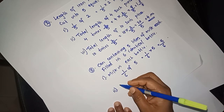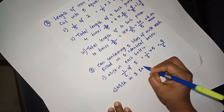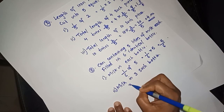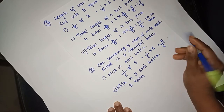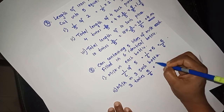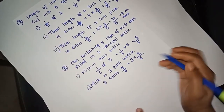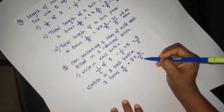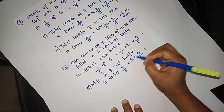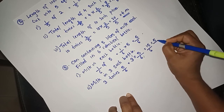3 times 5/6 is equal to 3 into 5/6. Here we multiply: 3 times 5/2 equals 5/2.